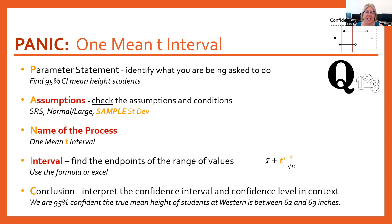That change is going to affect the name of the process. So instead of a one-mean z as in zebra interval, it's going to be a one-mean t as in tiger interval.